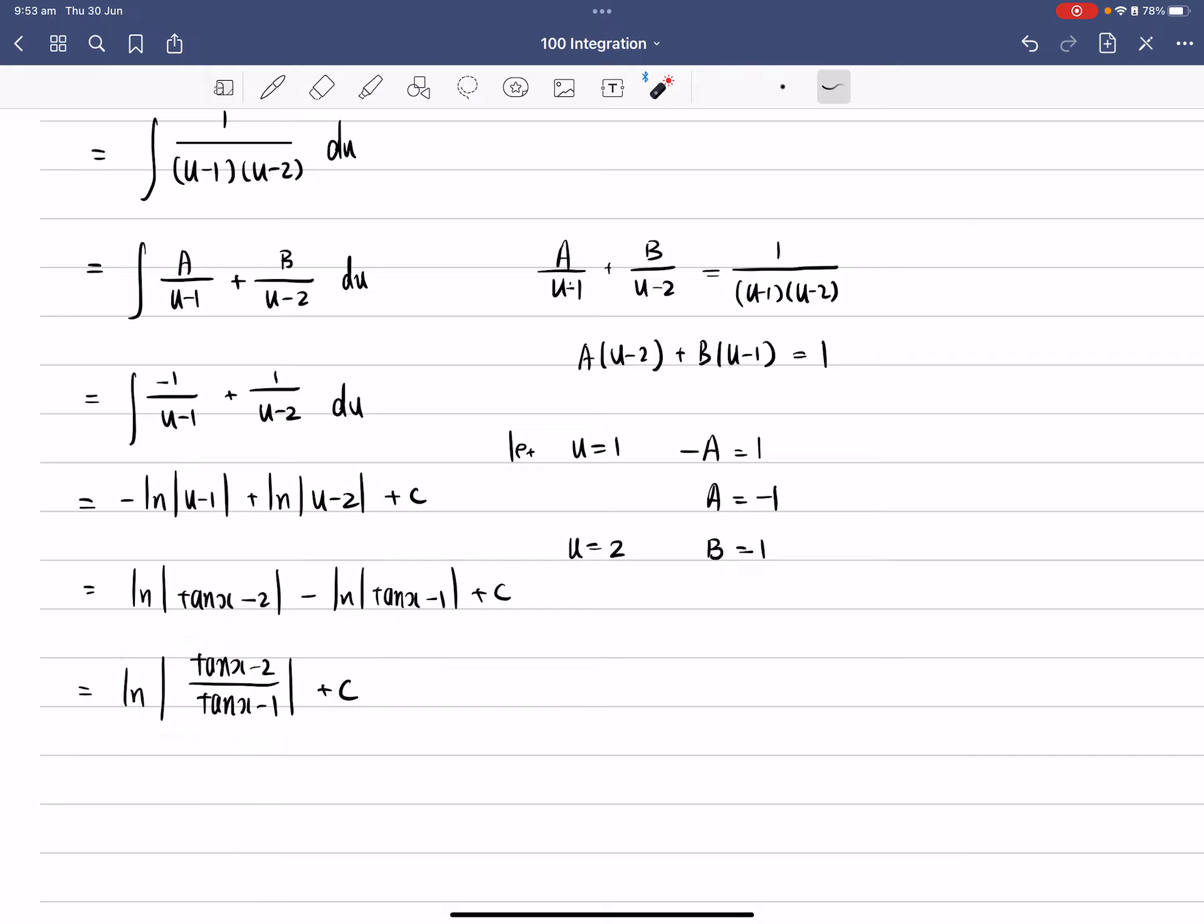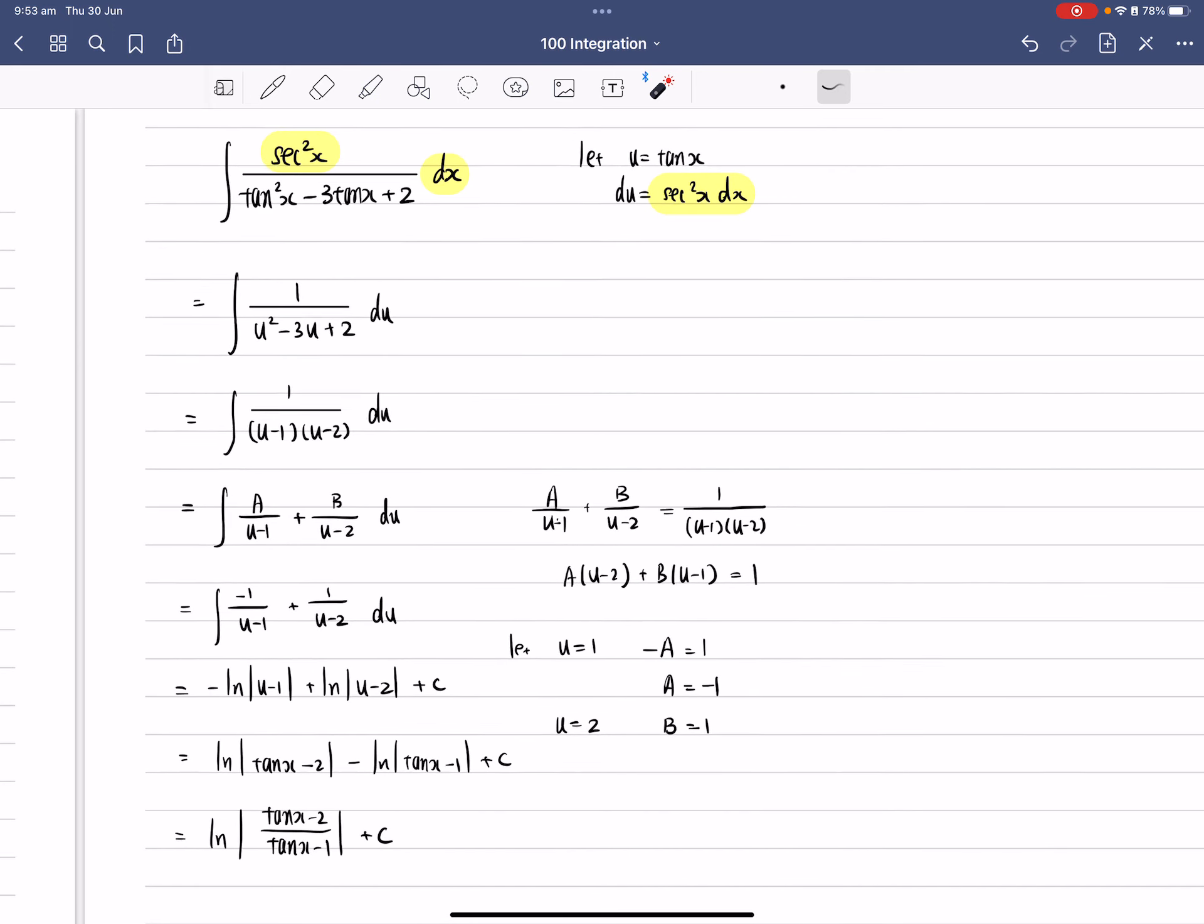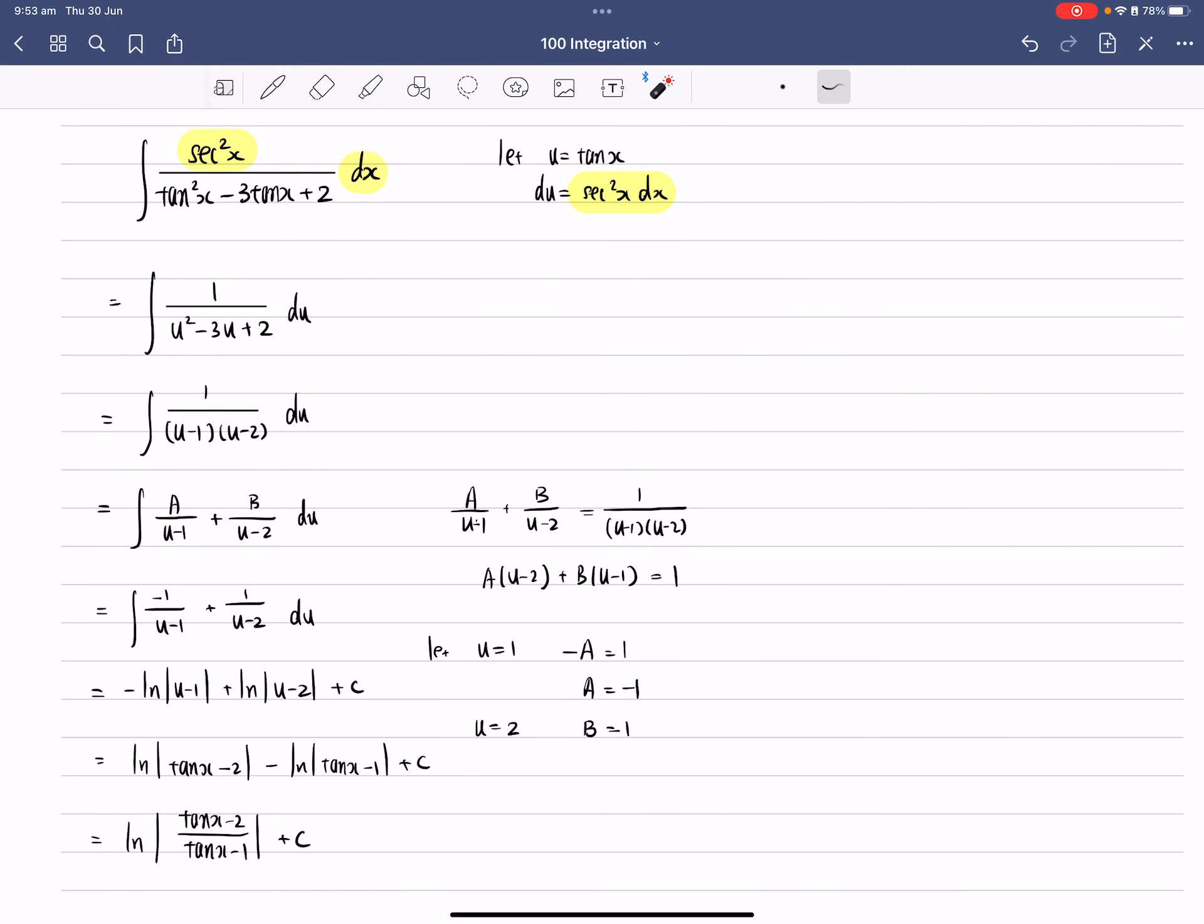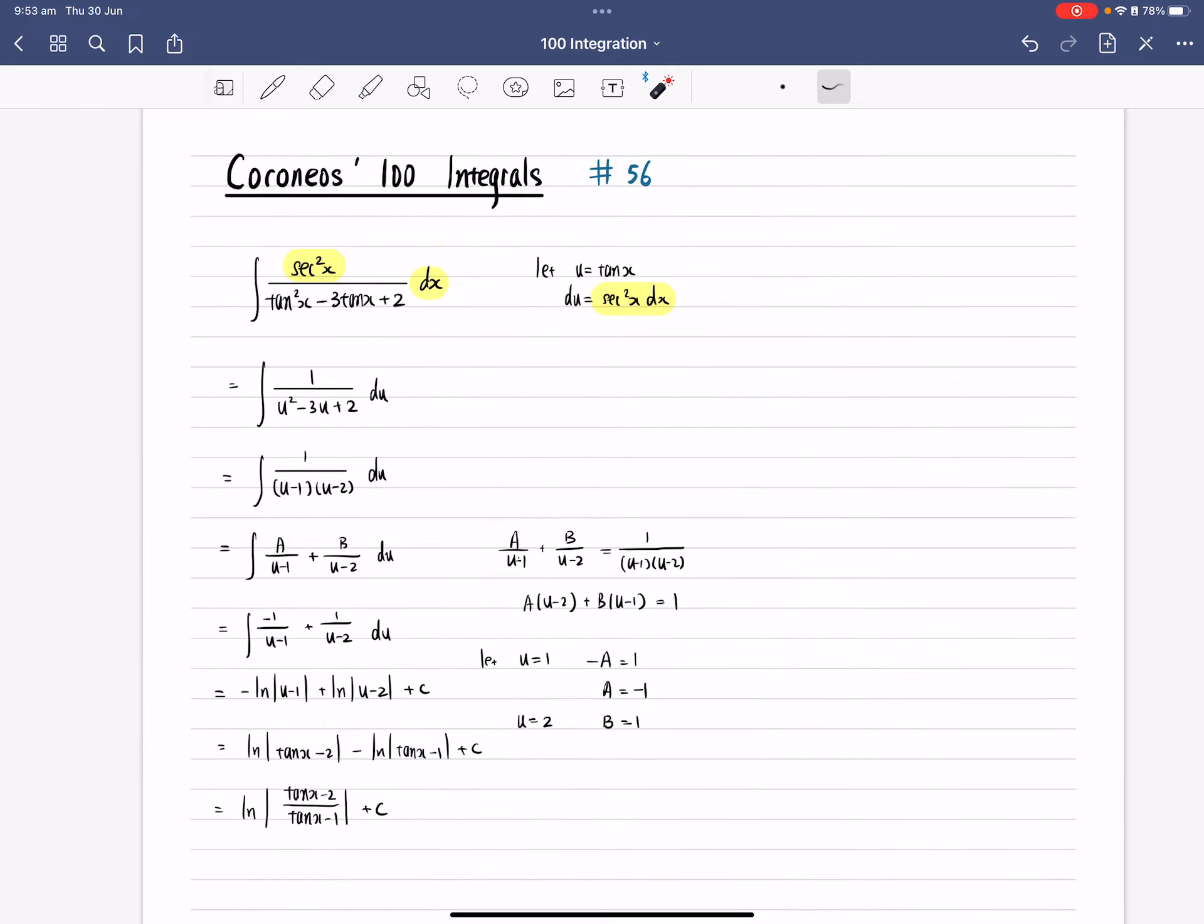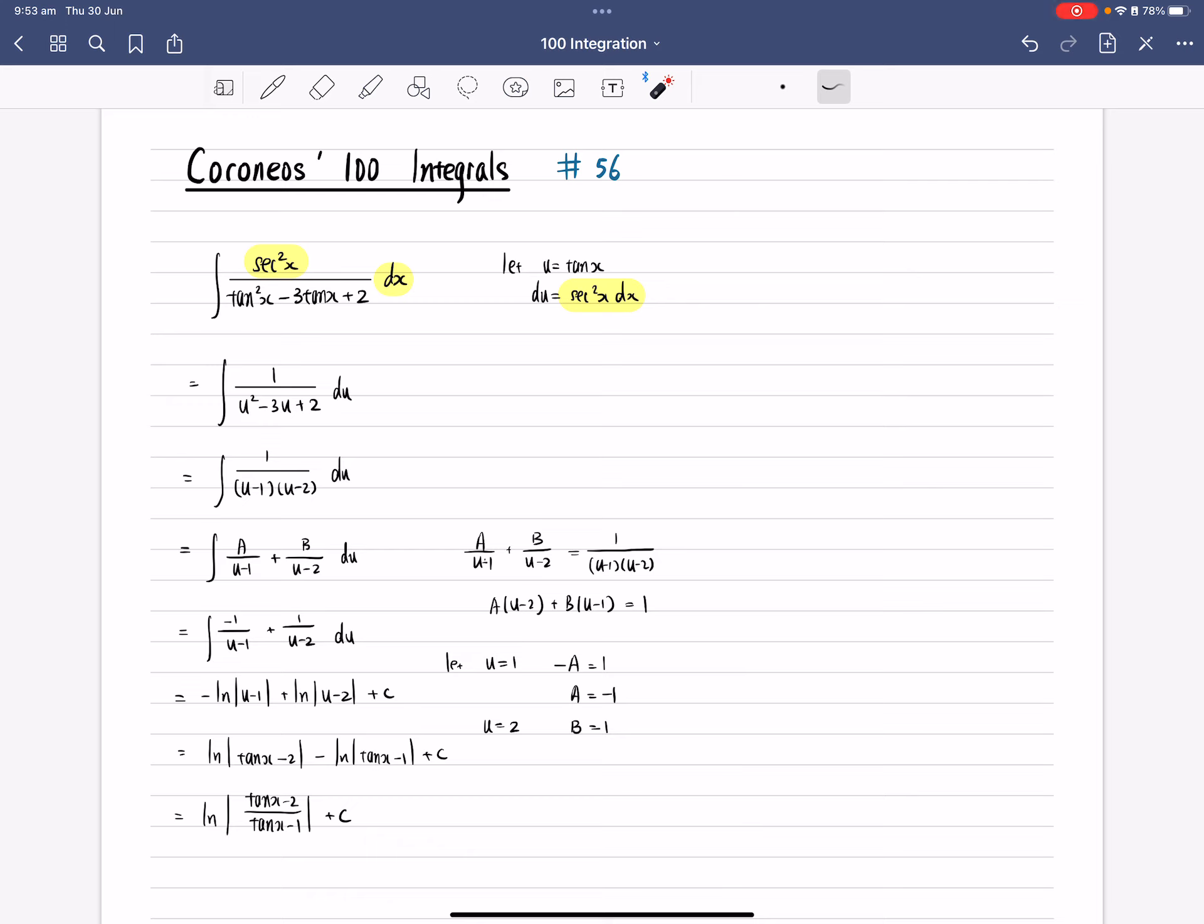Okay, so that's how you integrate this question here. It's a very nice question. It's a well-designed question where, you know, the derivative of tanx is equal to sec²x. So that really gives you a hint where you need to use a substitution to work out the answer. And after you substitute, you actually end up with a partial fraction question. So it's a pretty good question here. Alright, okay, so that is Coronies' 100 Integrals, number 56. Alright, thank you. Thanks for watching.